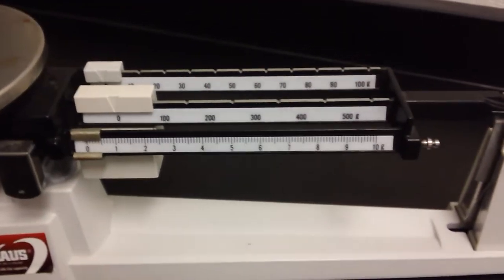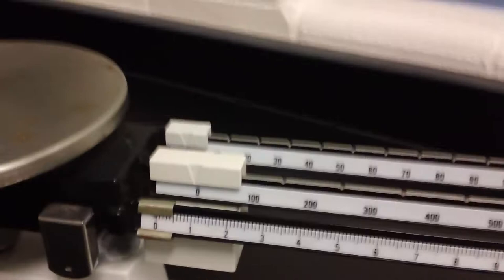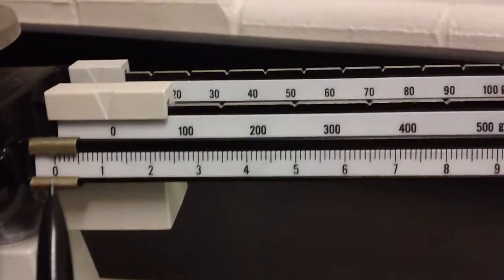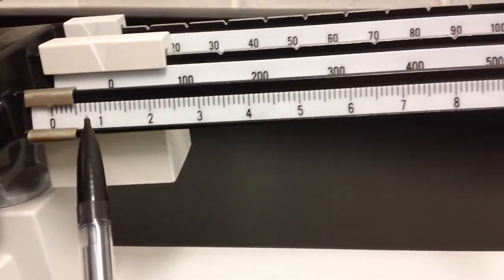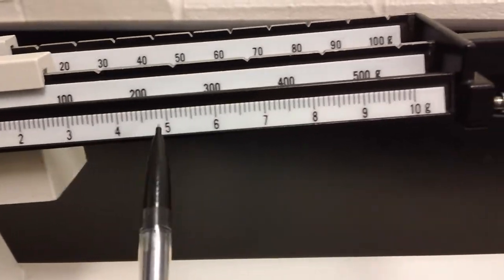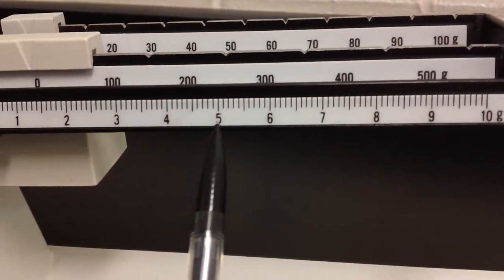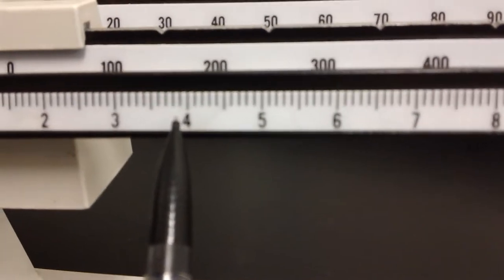All right, let's take a look at the three arms on our triple beam balance. The front arm is broken down into single grams. So everything you see here, one, two, three, four, five, these represent single grams, and these are actually broken down into tenths of grams.